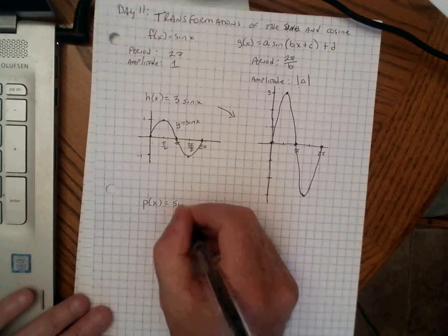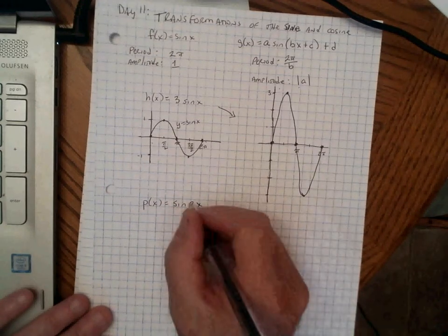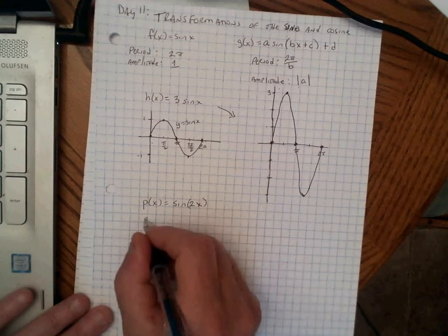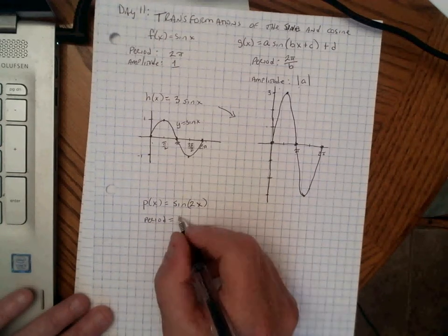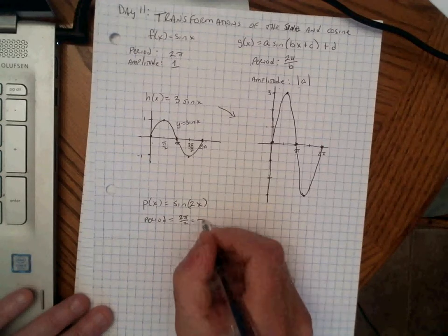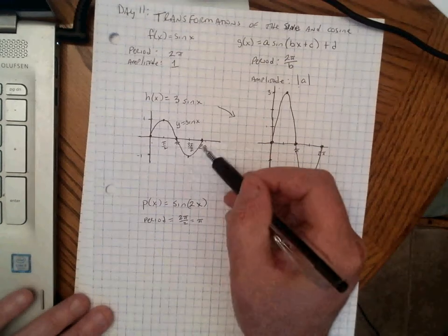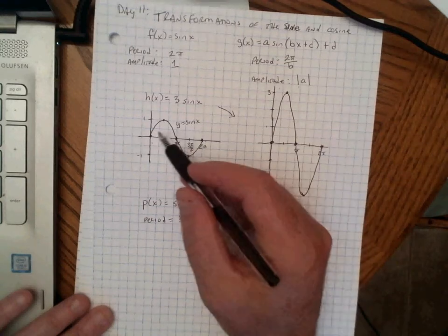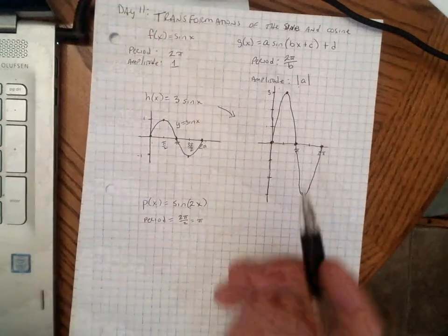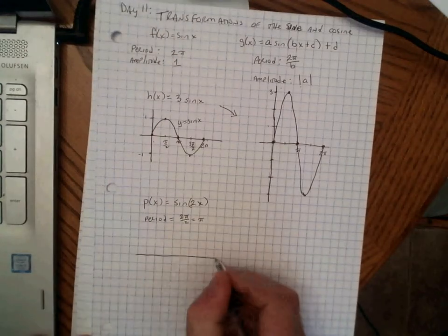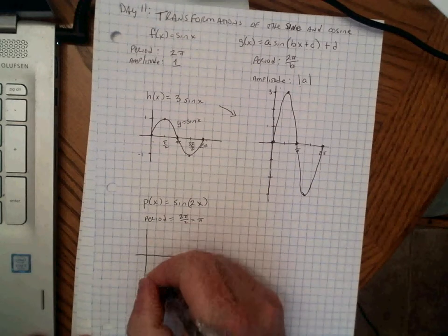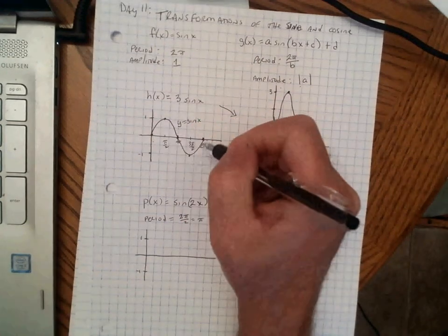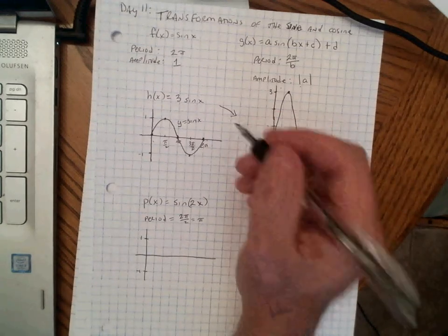What if we had p of x equals sine 2x? This one, the period is going to be 2 pi divided by 2, which is pi. All that means is the graph will complete one cycle in pi units instead of 2 pi. It will still have the same characteristics — it will just be a shorter cycle, like compressing the function horizontally.